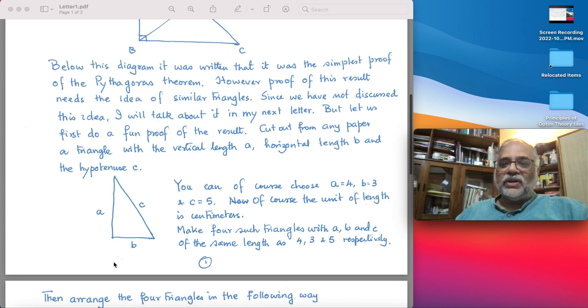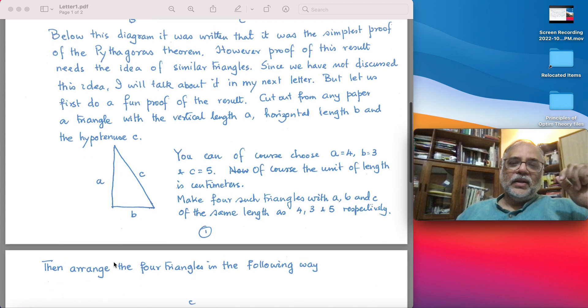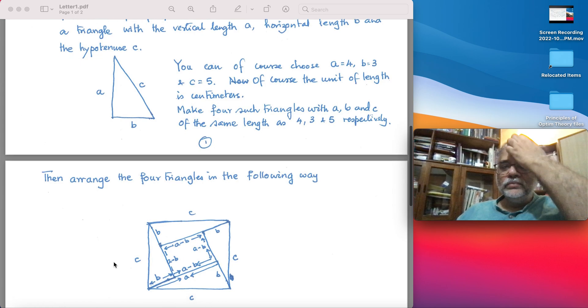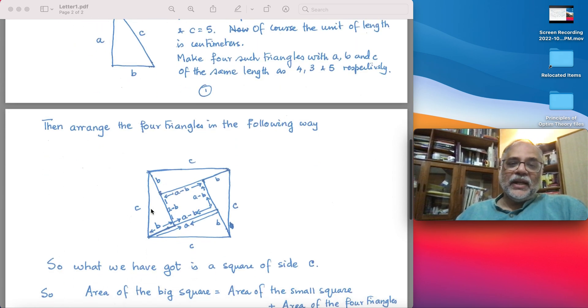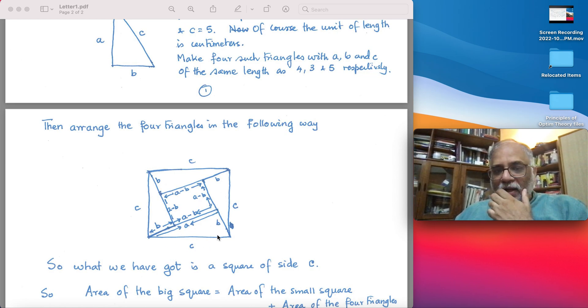Make four such triangles. We need two small papers with the same length as you've written, 3-4-5. Arrange those four triangles in the following way: keep the c on the outside. When you arrange these triangles, you essentially get a square with a hole, the space inside, and the c, the hypotenuse, lies on the outside. They become the side of a square.